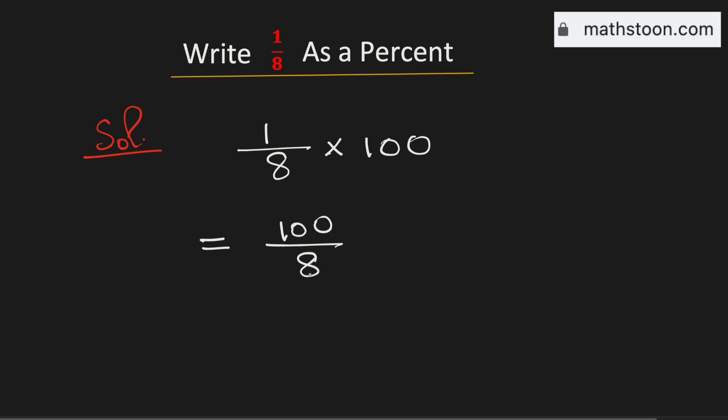See that both 100 and 8 are even numbers. So both the numbers will be divisible by 2. Dividing by 2, we get 50 in the numerator and 4 in the denominator.